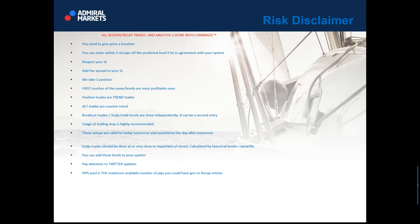I always put my analysis on Admiral Markets first, and if something unexpected happens I can do a revised analysis. The revised analysis I did with the Australian dollar gave us 35 pips of profit last week. If you see a scalp trade opportunity, do it very close to the zone or at the price level itself. All scalp level trades are calculated by historic levels and Camarilla. You can add all these levels to your system. Pay attention to Twitter updates.